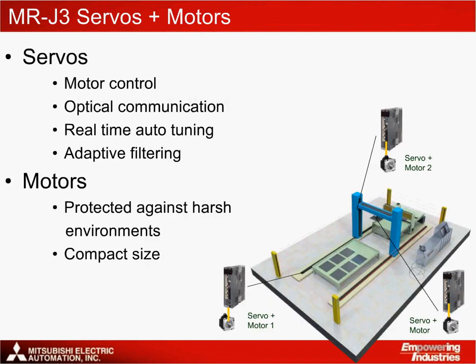The MRJ3 servos provide high speed and high accuracy motor control. They feature an optical fibre connection to the motion controller that allows real-time auto-tuning of the motors to minimize vibration within the system. This is completed with functions such as advanced vibration control, adaptive filter and robust disturbance compensation. The motors are compact in size, allowing them to be fitted in space-conscious applications. They feature flexible wiring and have environmental protection so that the motors can operate reliably in harsh environments up to IP65 and IP67 depending on the motor type.